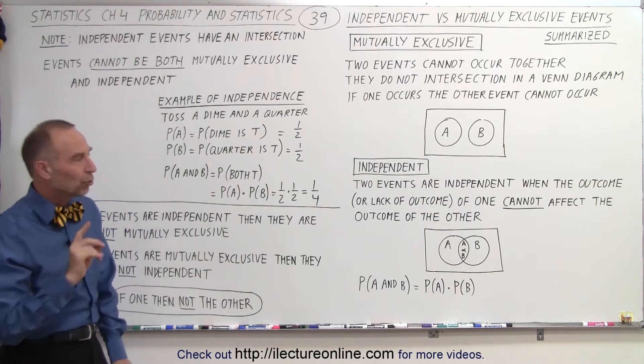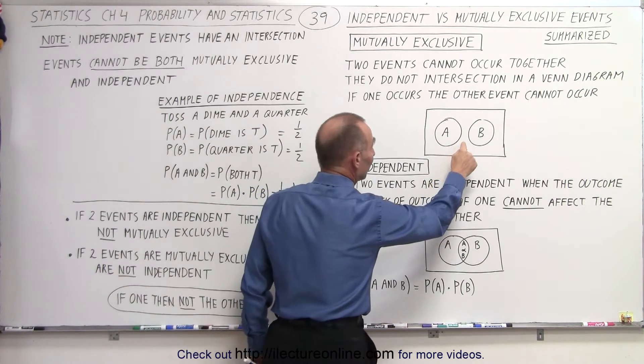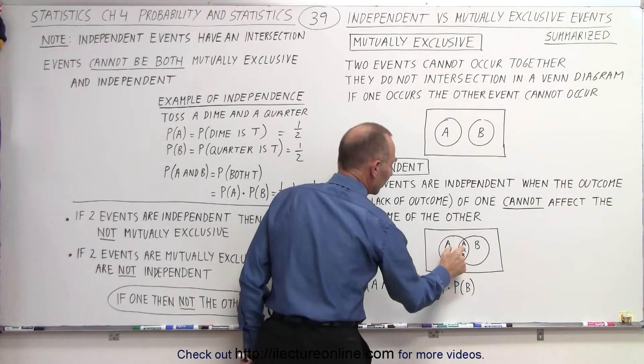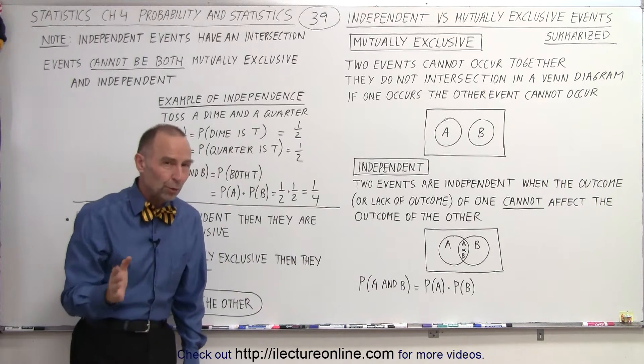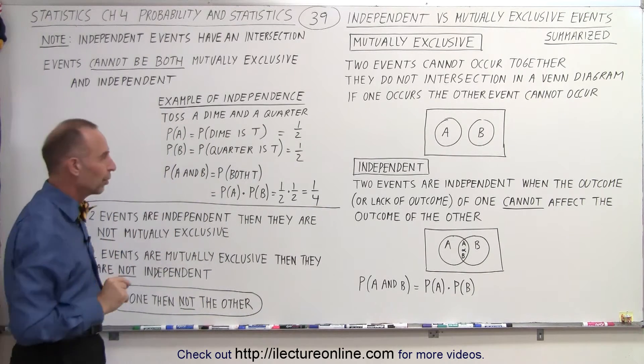And if they're independent, they cannot possibly be mutually exclusive. And the big reason why is that if you have mutually exclusive events, there is no intersection. If they're independent, then there is an intersection. So they cannot be both at the same time. And if it's one, it cannot be the other. And that's really important.